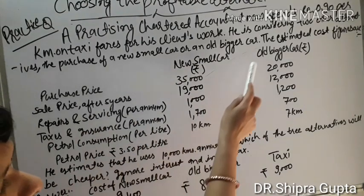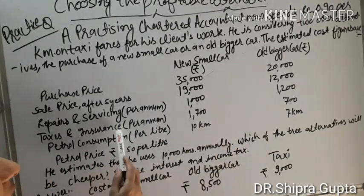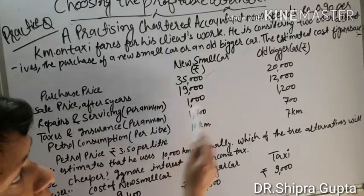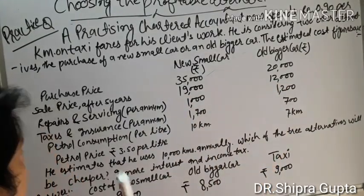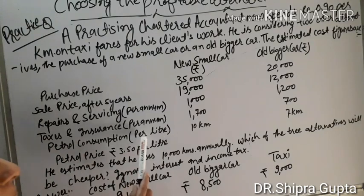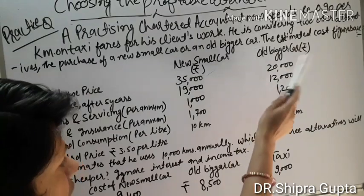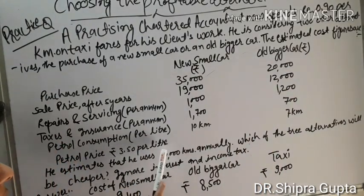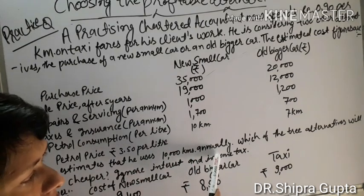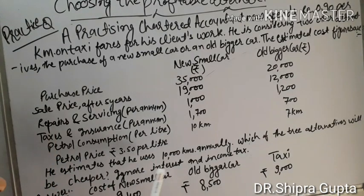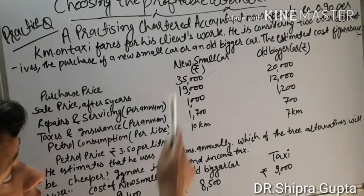Repairs and servicing per annum: new small car ₹1,000; old bigger car ₹1,200. Taxes and insurance per annum: new small car ₹1,700; old bigger car ₹700. Petrol consumption: new small car 10 km per liter; old bigger car 7 km per liter. Petrol price ₹3.50 per liter. He estimates 10,000 kilometers annually. Which of the three alternatives will be cheaper? Ignore interest and income tax.